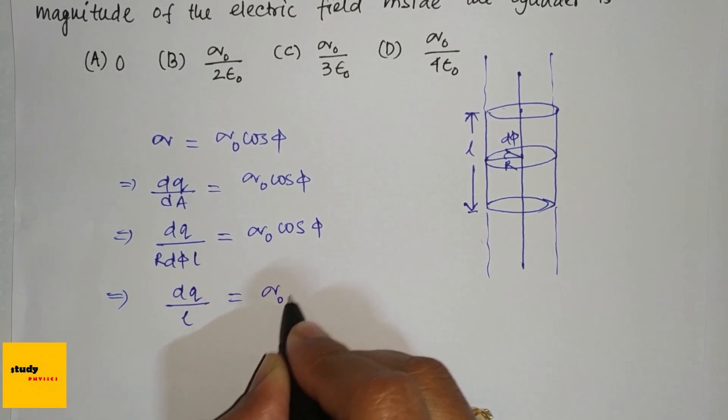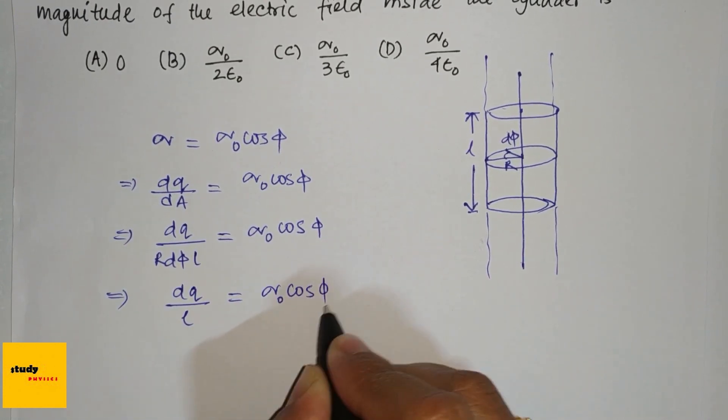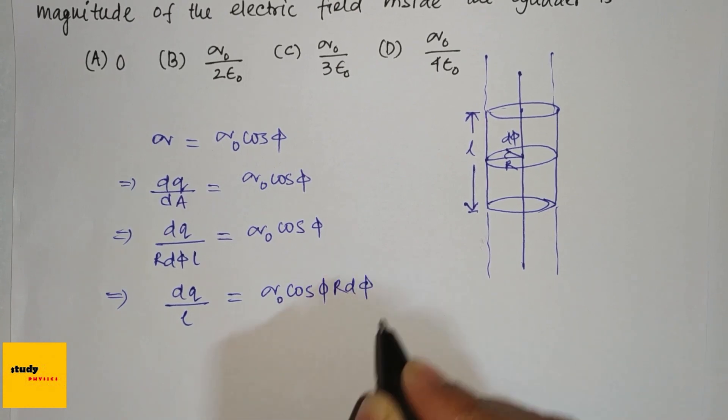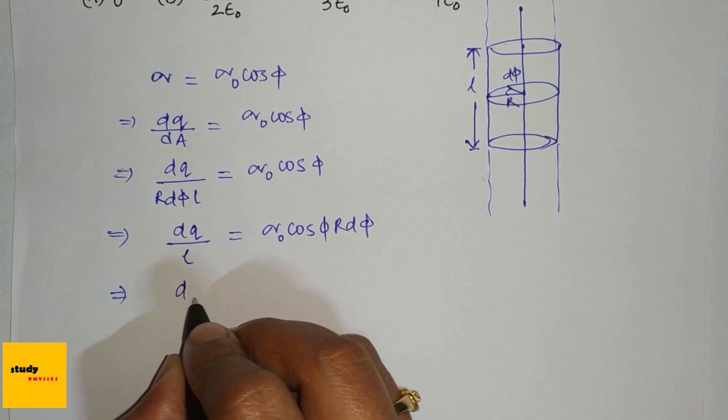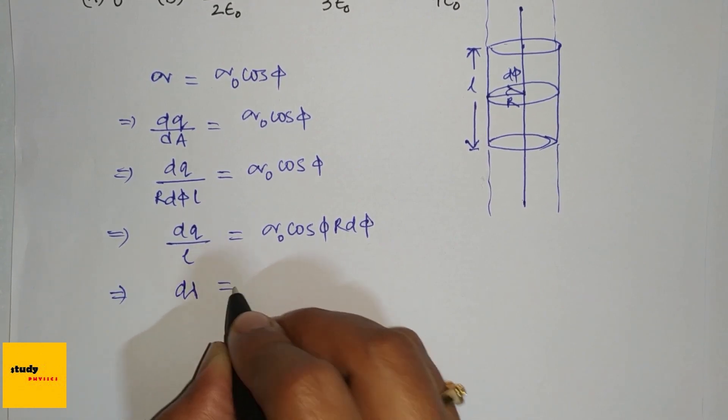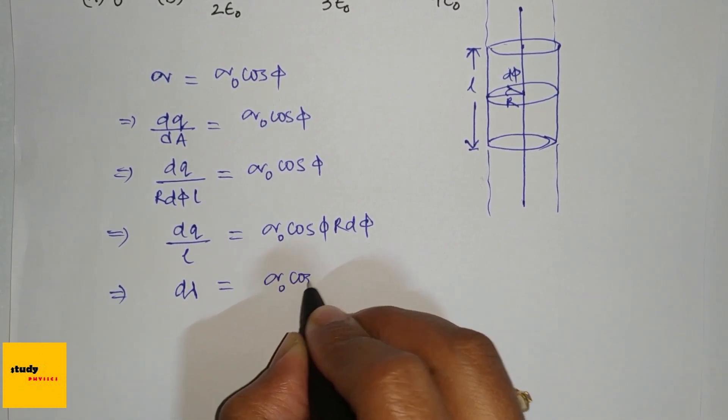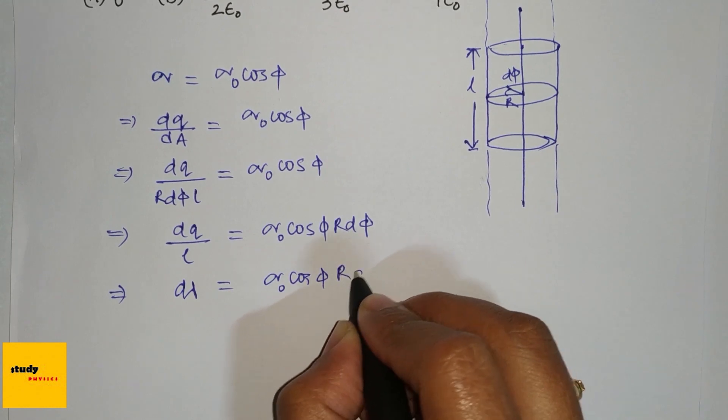Now dq/l equals sigma_0 cos(phi) · r · d(phi). We know dq/dl is the linear charge density d(lambda), which is sigma_0 cos(phi) · r · d(phi).